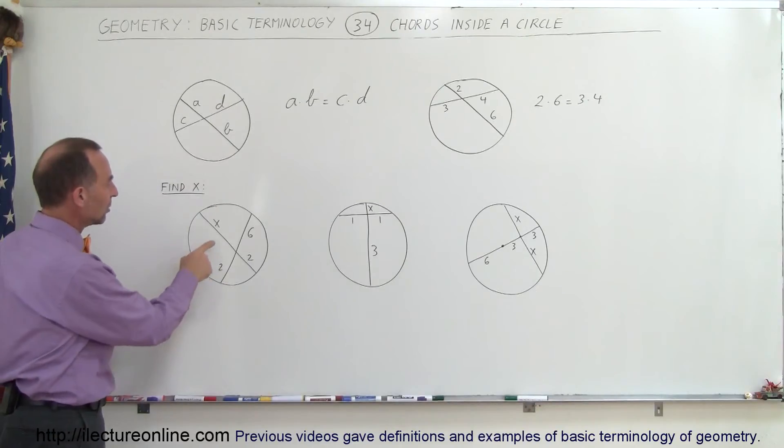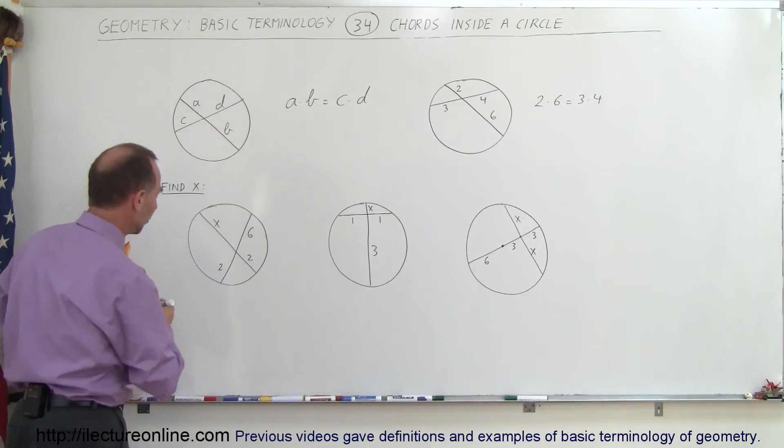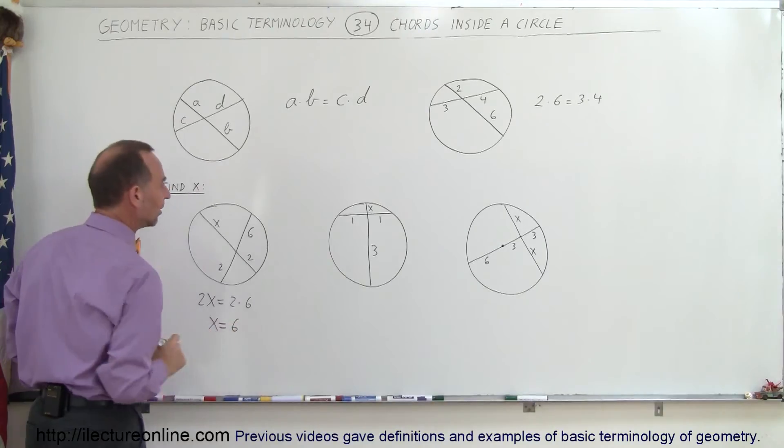And so we can say that here we can multiply X times 2 and that should equal 2 times 6. So 2X must equal 2 times 6. In other words, X is equal to 6 in this case.